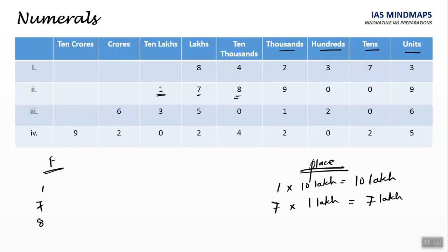For 8, 8 into 10,000. Hence place value of 8 is 80,000.